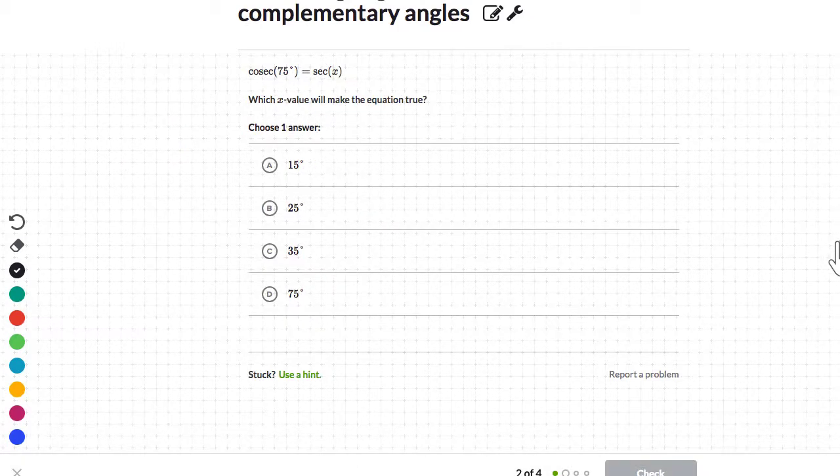Cosecant 75 degrees equals secant of x. Which x value will make the equation true? Okay, it's in effect just asking me, secant of what is equal to cosecant of 75? Once again, I know my relationship between cosecant and secant.